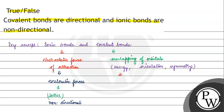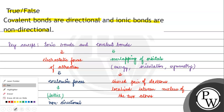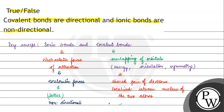If we talk about covalent bonds, when covalent bonds are formed, the electrons — the shared pair of electrons — are localized between the nuclei of the two atoms. There will be a shared pair of electrons that will be localized. This is why we say that covalent bonds are directional. For effective overlapping, the p-orbitals overlapping gives that directional character.